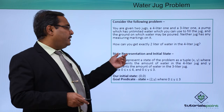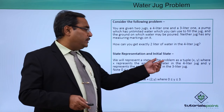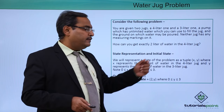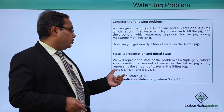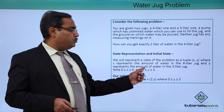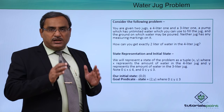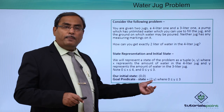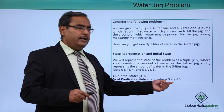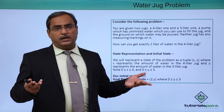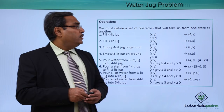For state representation, we represent a state of the problem as a tuple (x, y), where x represents the amount of water in the 4-litre jug and y represents the amount of water in the 3-litre jug. Note that x ranges from 0 to 4 and y ranges from 0 to 3. Our initial state is (0, 0) — both jugs empty — and our goal predicate is (2, y), where y ranges from 0 to 3 inclusive.